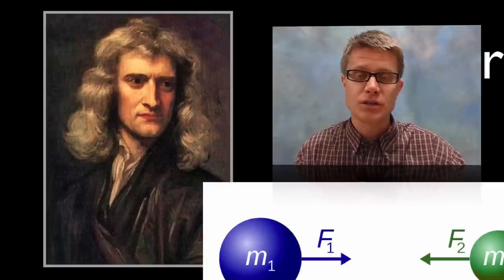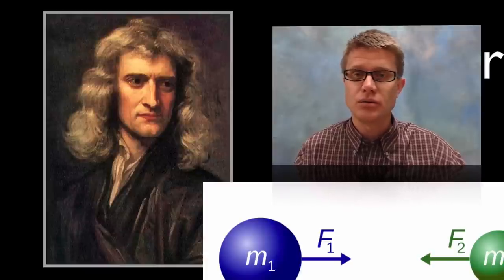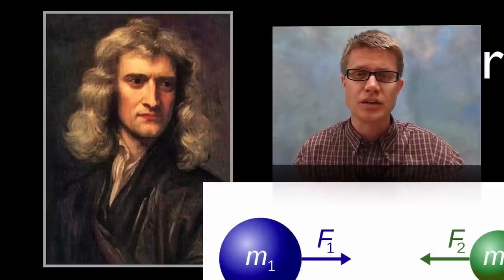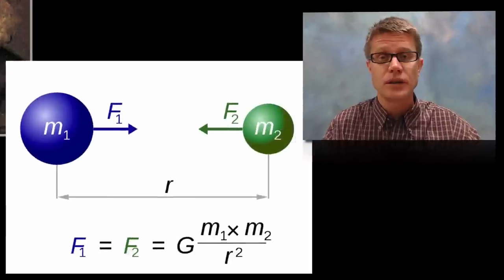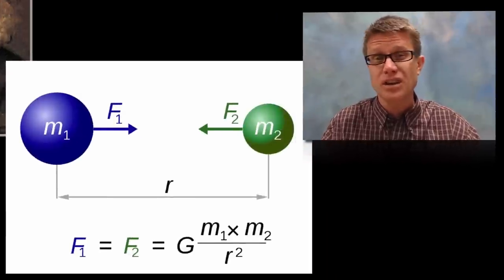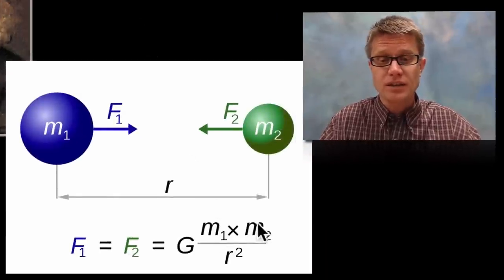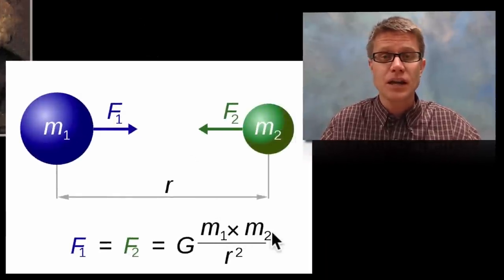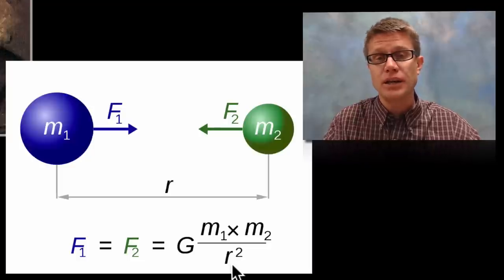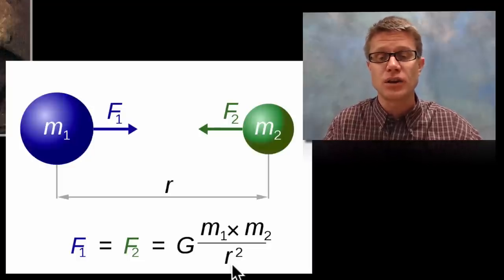No name is as synonymous with gravity as Sir Isaac Newton, who figured out that any two objects have a force between each other, and that's that gravitational force. And it's based on two things: number one is the size of the two masses, and then the second thing is the square of the radius, or the distance between their two centers of mass.